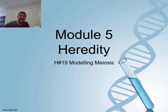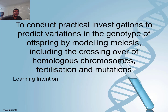Hi students, welcome to HSC Biology and Module 5, Heredity. This is video number 19 and we're going to talk through the process of modelling meiosis. In this particular area of the topic, we are looking at conducting practical investigations to predict variations in the genotype of offspring by modelling meiosis, including the crossing over of homologous chromosomes, fertilisation and mutation. We're also going to be looking at some of Mendel's laws and the other variations on the laws of inheritance founded by his work on pea plants.